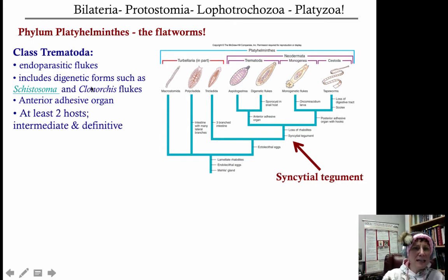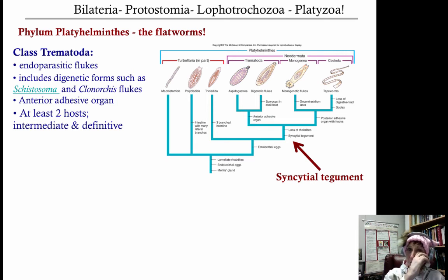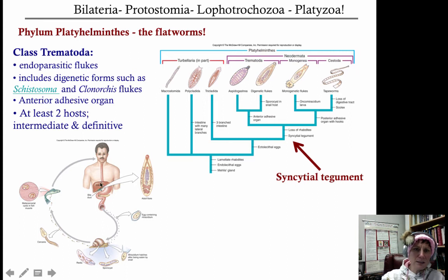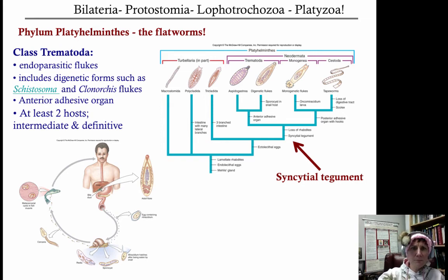They're called digenetic flukes because they have two hosts — di meaning two, two genetic forms. They have an intermediate host where they go through part of their life cycle, and a definitive host — the final host — where they engage in the final stage of reproduction. In one example, the first host is a snail, then a fish, and if you ingest the fish you can get infected with liver flukes. They often hang out in the livers of their definitive host.